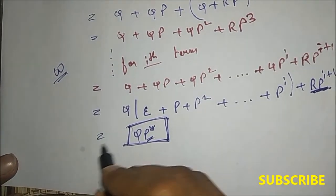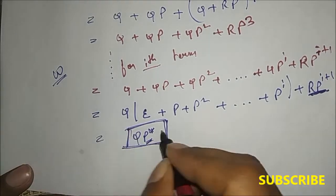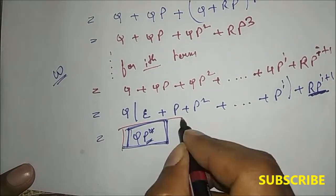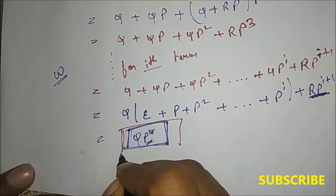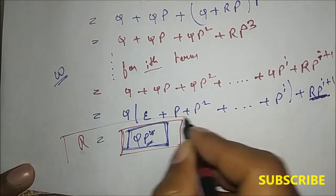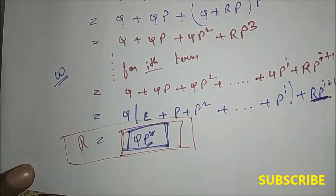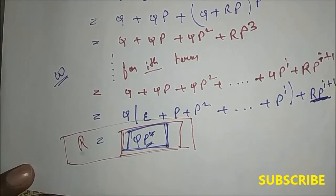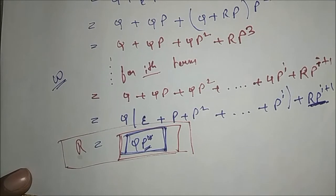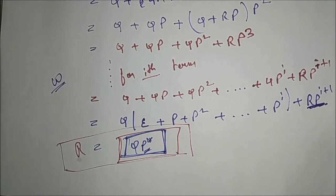This is how we derive R equal to Q plus RP — Arden's theorem. This is the main important equation which will be required to convert DFA into regular expression, which we will see in the next video. Thanks for watching.